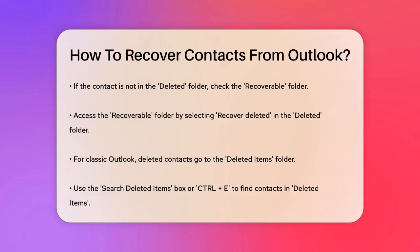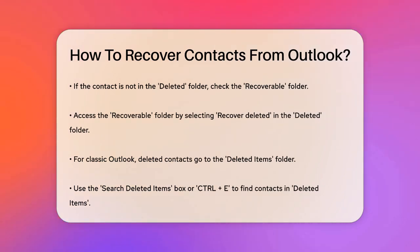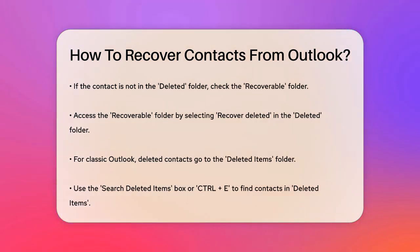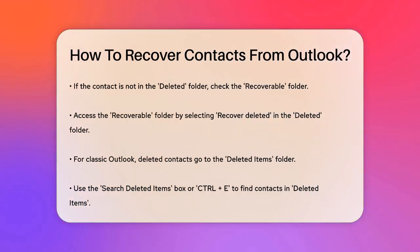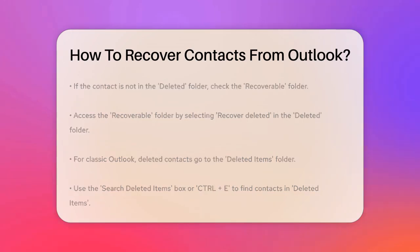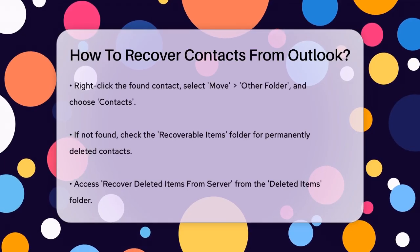If you're using the Classic Outlook version, the process is a bit different. Deleted contacts go to the Deleted Items folder in your mailbox. To recover a contact, go to your email folder list, click on Deleted Items, and use the Search Deleted Items box or press Control-E to find the contact. Once you've found it, right-click the contact, select Move > Other Folder, and then choose Contacts to move it back to your contact list.